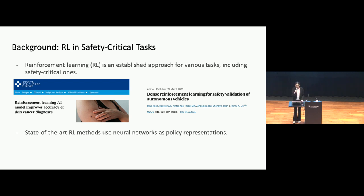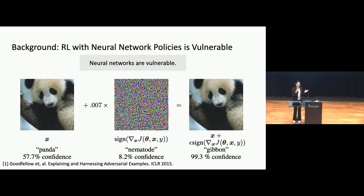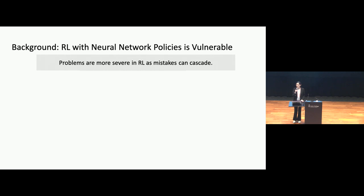However, existing state-of-the-art reinforcement learning methods usually use neural networks as policy representations, and we know that neural networks are vulnerable. Here is a famous example: researchers have an image of a panda, then insert noises onto the image. Even though the image still looks very similar to human eyes, it cannot be correctly classified by the neural network. The problems are more severe in the reinforcement learning setting because it is a multi-step setting and one-step mistake can cascade.